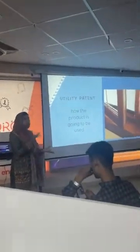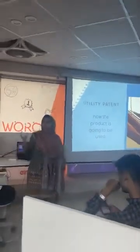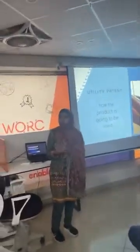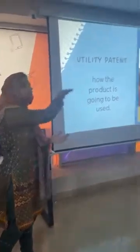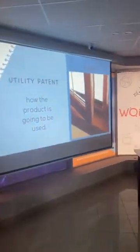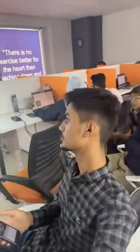Then comes utility patent. Utility patent is basically about how the product is going to be used. We use a toothbrush to clean our teeth, but for instance, if any person has restricted the usage of this product for cleaning the railing of windows, then nobody else can use that same toothbrush for any other purposes in their product listings when writing content.